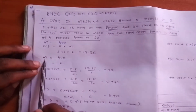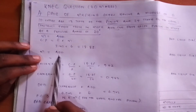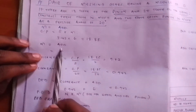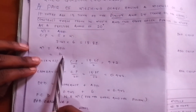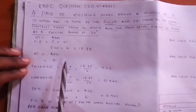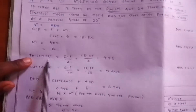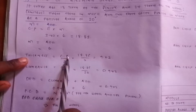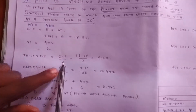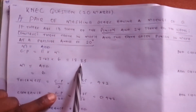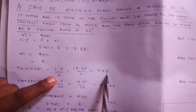You look for the module. The module is always equal to the addendum. Our module in our question is 6, so the addendum is 6 — module and addendum are always the same. Then you look for the thickness. Thickness is equal to CP divided by 2. Our CP was 18.85, so if you divide by 2 it will be 9.42.